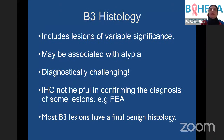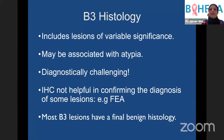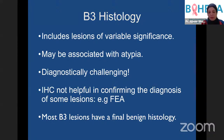Their histology is heterogeneous because they include lesions of variable significance — some completely benign, some associated with atypia. By definition, they are difficult to diagnose: what's straightforwardly benign is easy, cancer is easy, but the bit in the middle is challenging. Sometimes immunohistochemistry is not helpful in confirming the diagnosis — for example, flat epithelial atypia — so these are all morphological diagnoses.